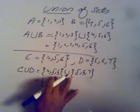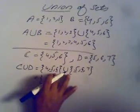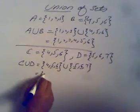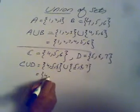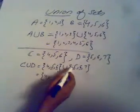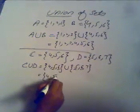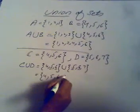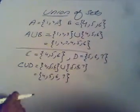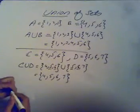When we combine these two sets, we take common elements as a single element, because repeating them would violate the basic definition of a set that it should have distinct elements. So we write 4, then only one 5, then 6, then 7. This is how we perform the union of two sets.